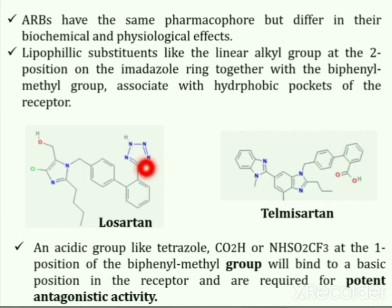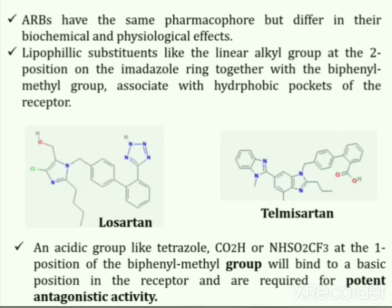An acidic group like tetrazole, CO2H, or NHSO2CF3 at the first position of the biphenyl methyl group is intended to bind to a basic portion in the receptor, and these groups are responsible for the potent antagonist activity of the compounds.